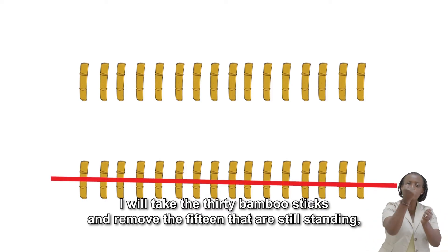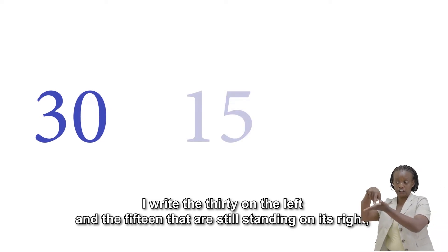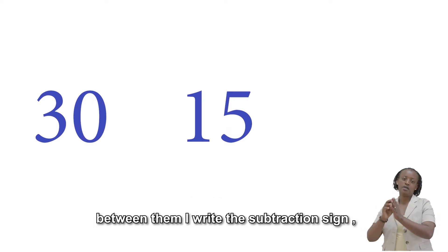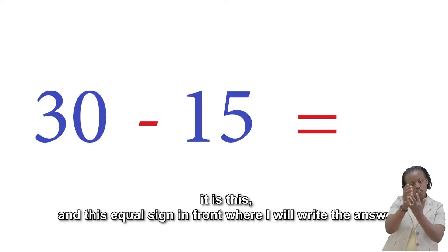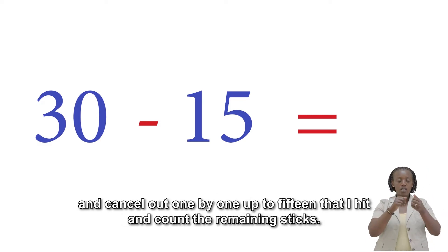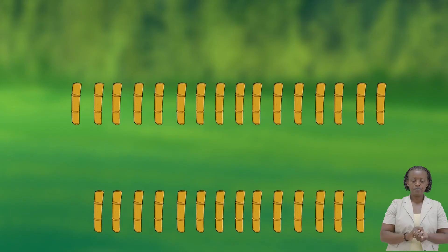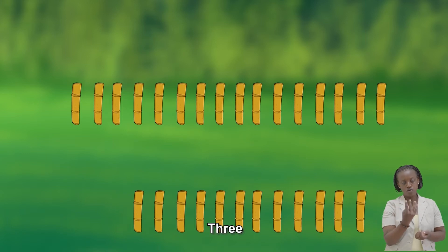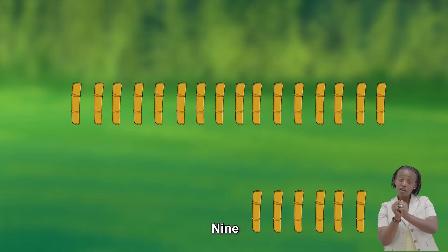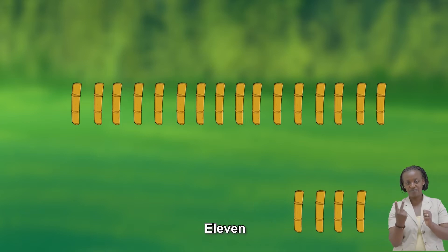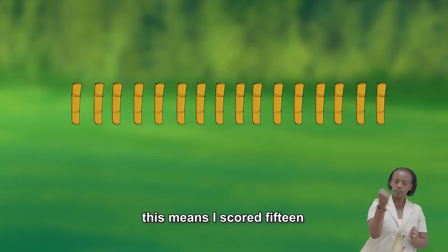There are 15 sticks left standing. To calculate how many I have hit, I will take the 30 bamboo sticks and remove the 15 that are still standing. I write the 30 on the left and the 15 that are still standing on its right. Between them I write the subtraction sign, and the equal sign in front of where I will write the answer. And cancel out one by one up to 15. Let us do it together: 1, 2, 3, 4, 5, 6, 7, 8, 9, 10, 11, 12, 13, 14, 15. This means I scored 15.